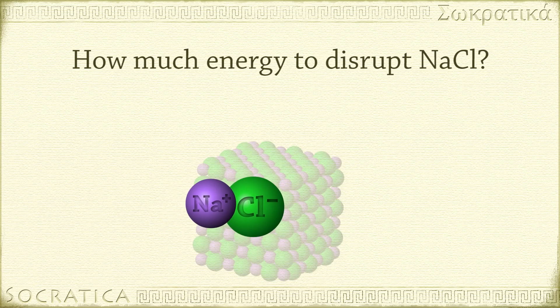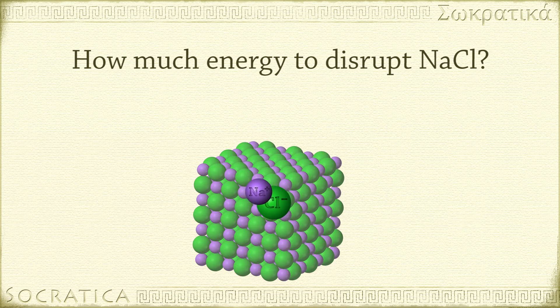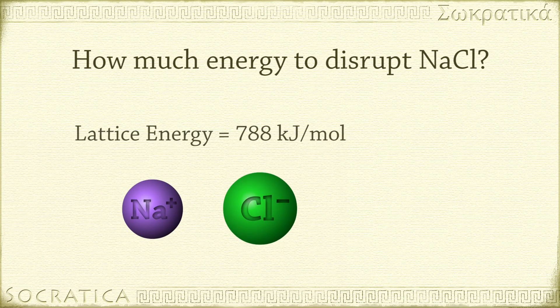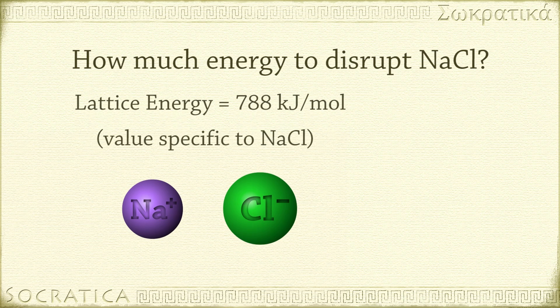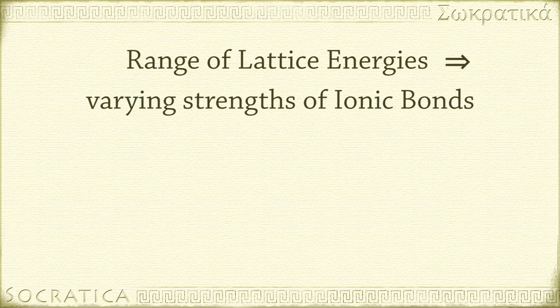Sodium chloride typically exists as a lattice of many atoms. To disrupt that lattice of NaCl into Na+ ions and Cl− ions requires 788 kJ per mole. But we wouldn't say that 788 kJ per mole is the strength of all ionic bonds — that's only the measured value for NaCl in particular. Rather, there is a range of lattice energies for different ionic compounds, which tells us there are varying strengths of ionic bonds.